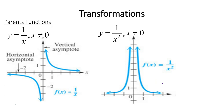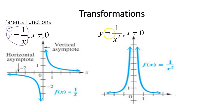Now, graphing using transformations. There are two parent functions we'll be dealing with for rational functions: 1 over x, and 1 over x squared. These are the two parent functions for this section.